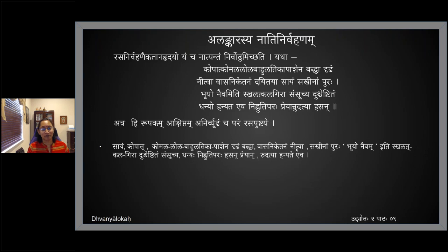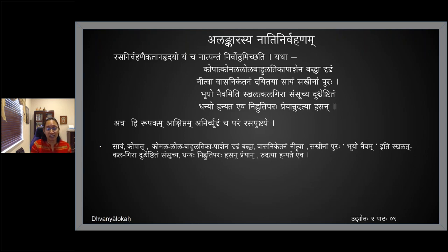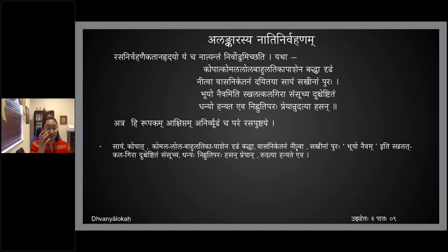The example given is from Amarushatakam: Kopat Komala Lola Bahu Latika Pashena Baddhva Dhridham Nithvavas Niketanam Daidaya Sayam Sakhinampuraha Bhuyo Naivamiti Skhalat Kalagira Samsuchya Duschyeshtitam Dhanyo Hanyate Eva Ninnuti Paraha Preyan Rudatyah Hasan. The scene here is that the Naika suspects her beloved has been unfaithful to her.